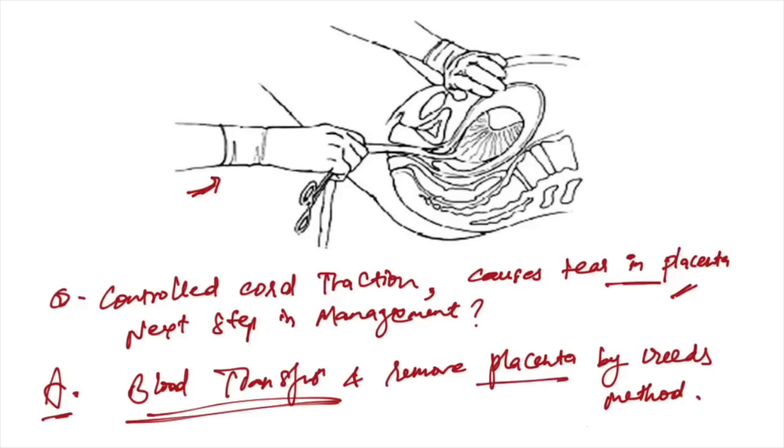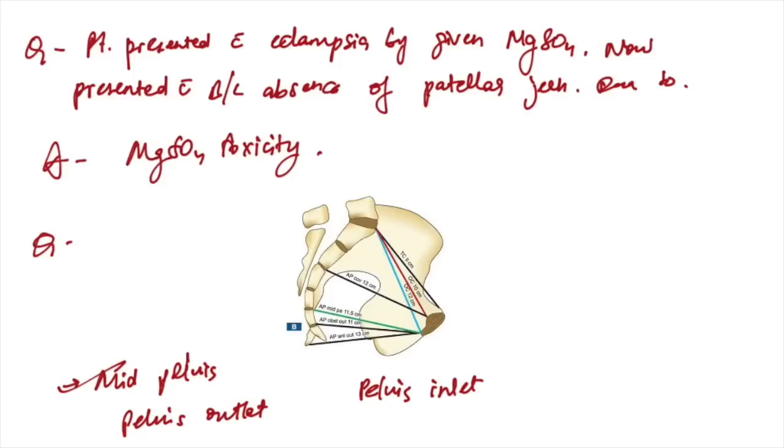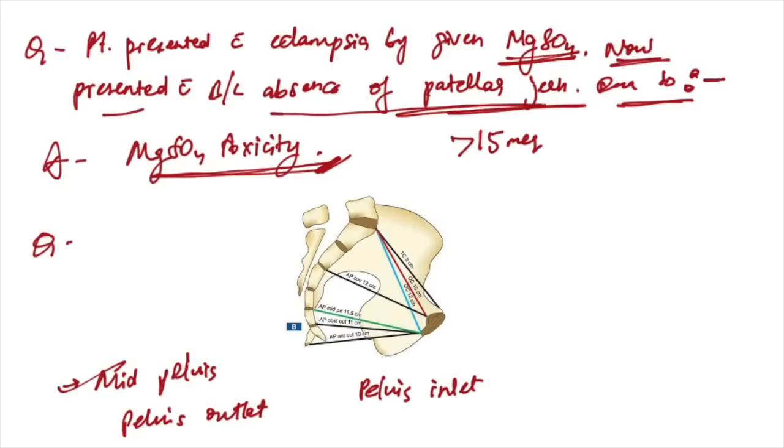Patient presented with eclampsia, MgSO4 was given. Now she's complaining of bilateral absence of patellar jerk. The reason is MgSO4 toxicity which causes absence of patellar jerk. If greater than 15 milliequivalent MgSO4 levels, it can cause cardiac issues.